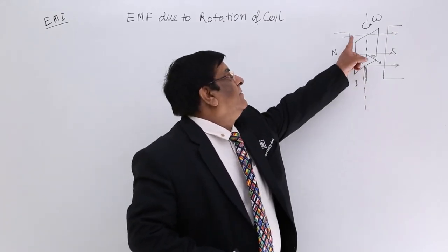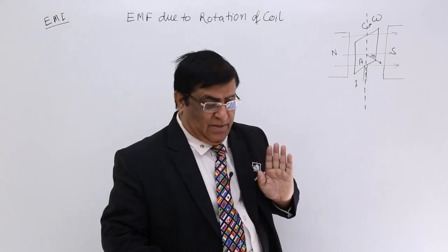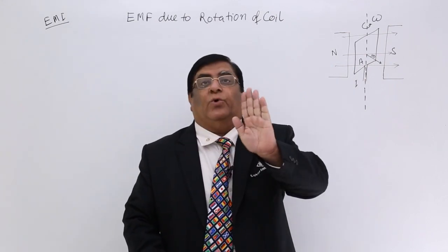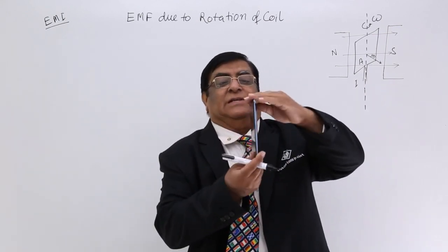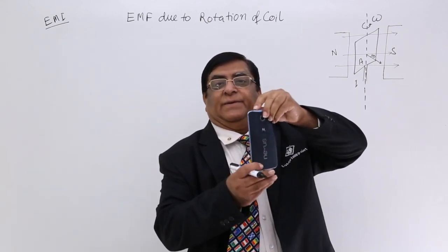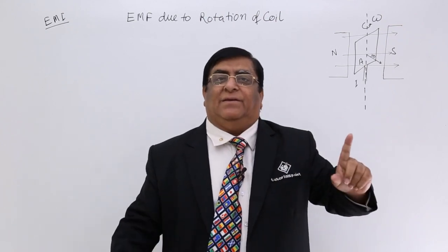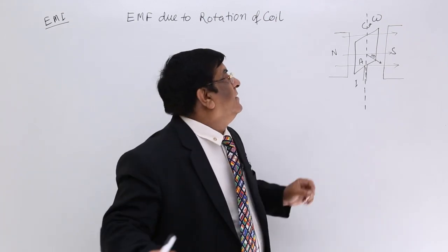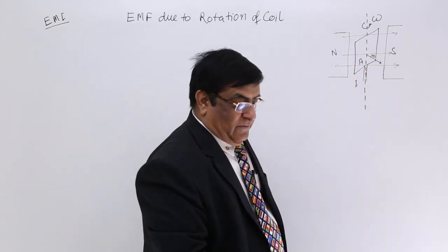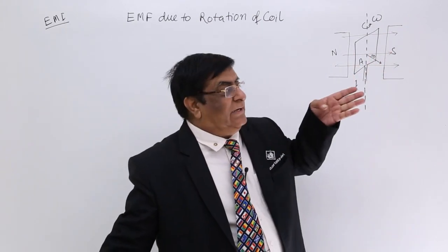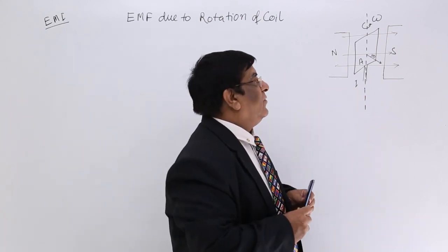There is a coil and this coil is fitted in such a way that it is free to rotate. Now this coil is kept in a magnetic field — here is a magnetic field between north to south and we have kept this coil here and we are rotating it.